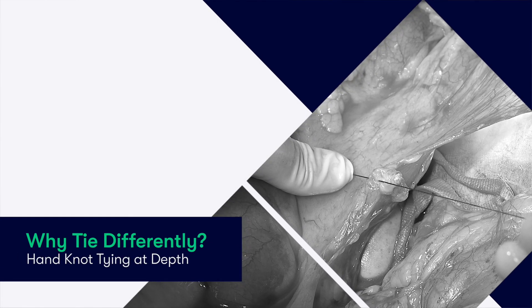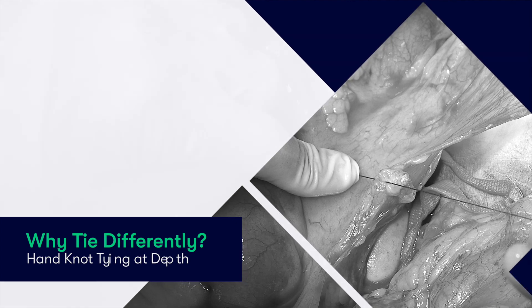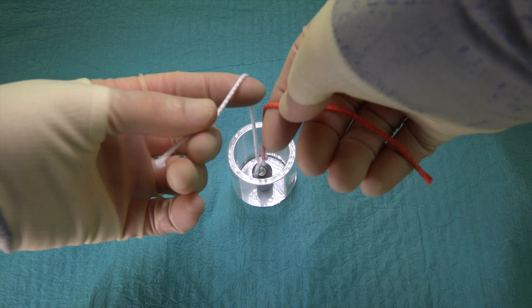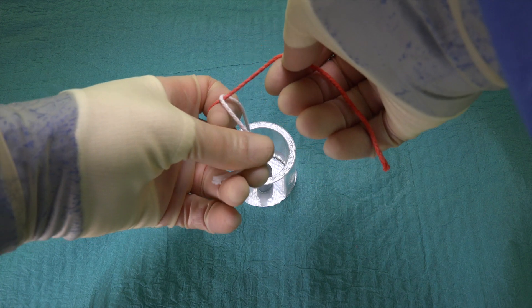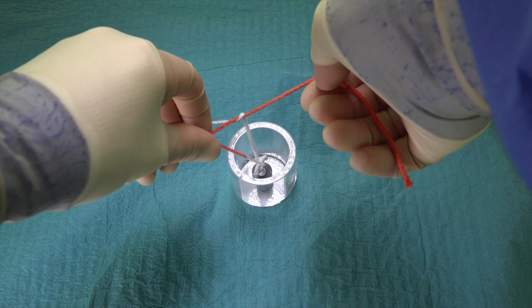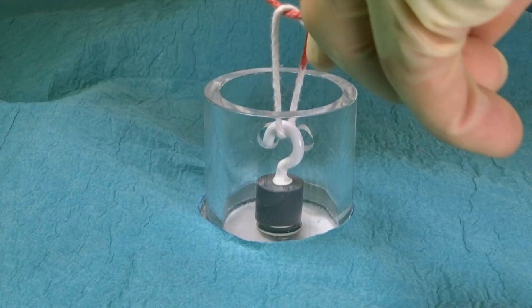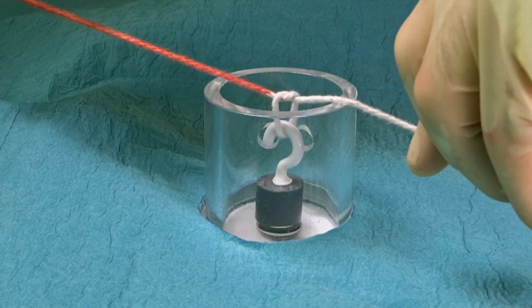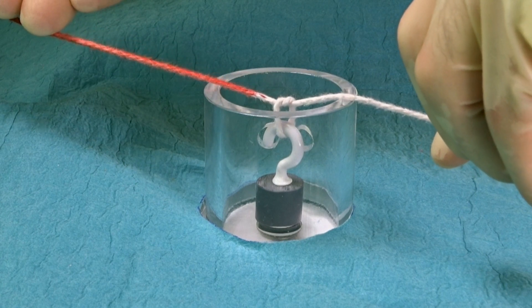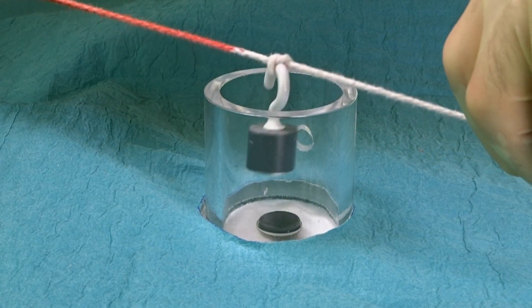If we were tying a blood vessel lying deep within the abdominal cavity, and we use the same technique of crossing our hands horizontally with every throw, as we do when we perform a simple reef knot, we would run the risk of creating too much tension on the vessel which may cause it to tear and bleed. In this case, the excessive tension causes the metallic hook to be pulled off its magnetic base.